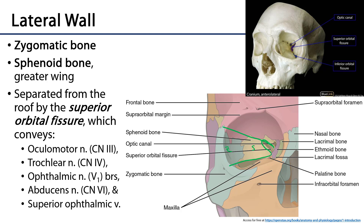The superior orbital fissure conveys cranial nerve 3, the oculomotor nerve, which drives most of the extraocular muscles; cranial nerve 4, the trochlear nerve, which drives the superior oblique muscle; V1, the ophthalmic branch of the trigeminal nerve; and cranial nerve 6, the abducens nerve, which innervates the lateral rectus muscle. It also conveys the superior ophthalmic vein, one of two major veins — the other being the inferior ophthalmic vein — that drain the orbit and surrounding environments.